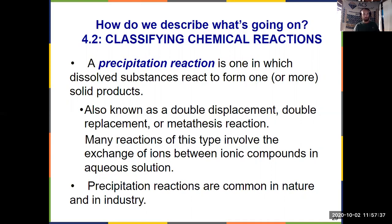So what's the first one we're looking at? A precipitation reaction. And a precipitation reaction is where you have dissolved substances, so two or more dissolved substances that combine and react to form one or more solid products. So you may have learned this in the past as a double displacement, a double replacement, or a metathesis. Here we're calling it a precipitation reaction because it involves the formation of a solid precipitate.